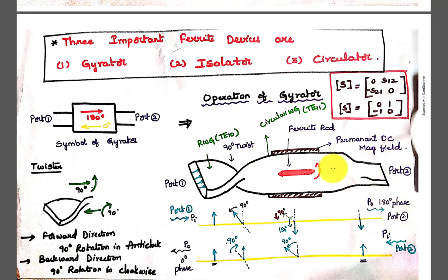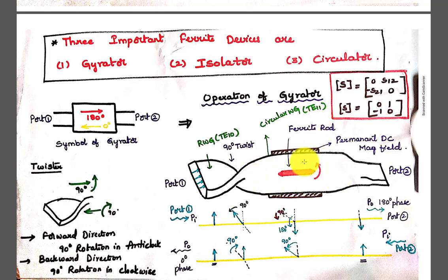At the output end, there is a circular-to-rectangular transition. For a rectangular waveguide, the dominant mode is TE10; for a circular waveguide, the dominant mode is TE11. So the dominant mode TE10 of the rectangular waveguide is converted to TE11 of the circular waveguide. A permanent DC magnetic field is applied, causing Faraday's rotation. This ferrite rod must be placed under a proper DC magnetic field so that, because of the composition changes, it spins over an angle of theta.